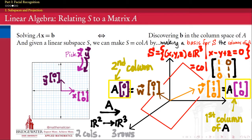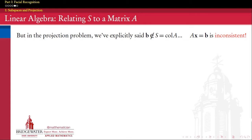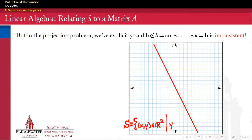Now we want to push a step further. What we were talking about — column spaces and solving Ax = B — concerned consistent linear systems. The problem of projection is that by its very nature it leads to an inconsistent system of equations. Let's illustrate this by choosing the subspace in R2 satisfying y equals negative 2x — a line with slope negative 2 through the origin — and choosing a point B = (2, 10) which is not part of that column space.